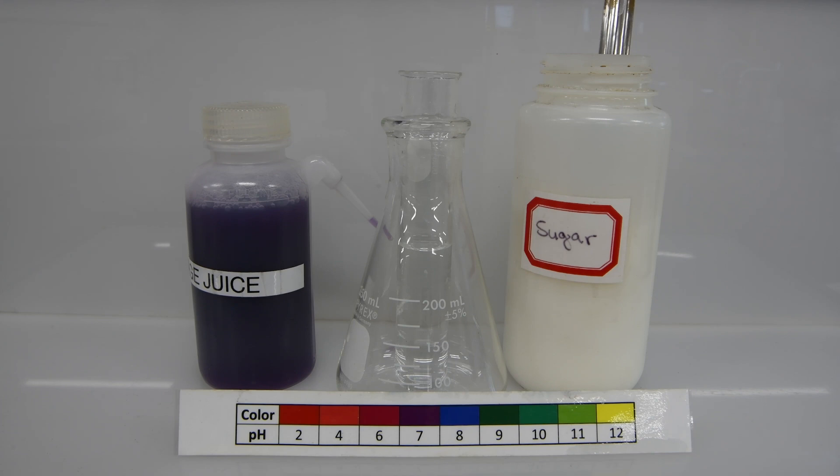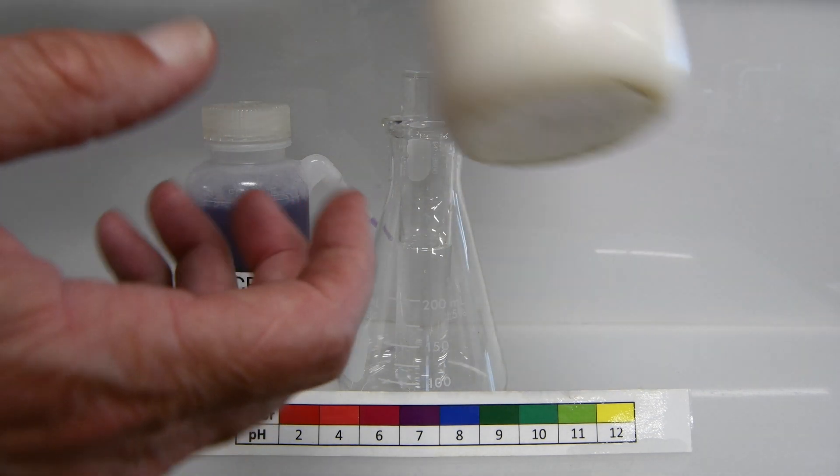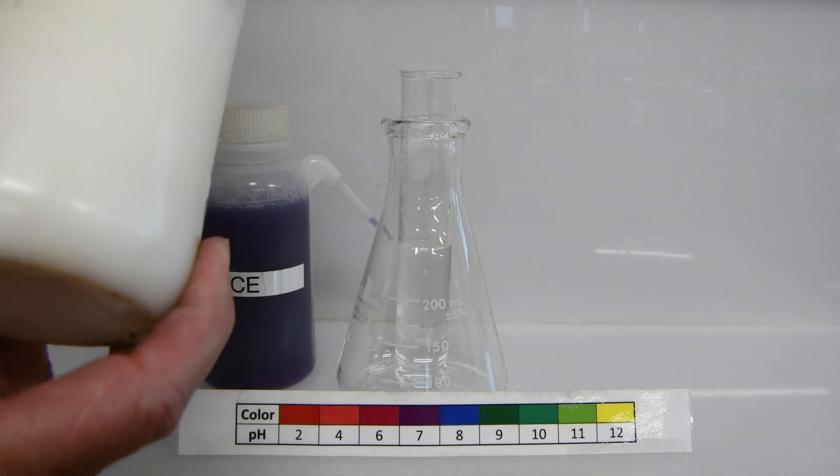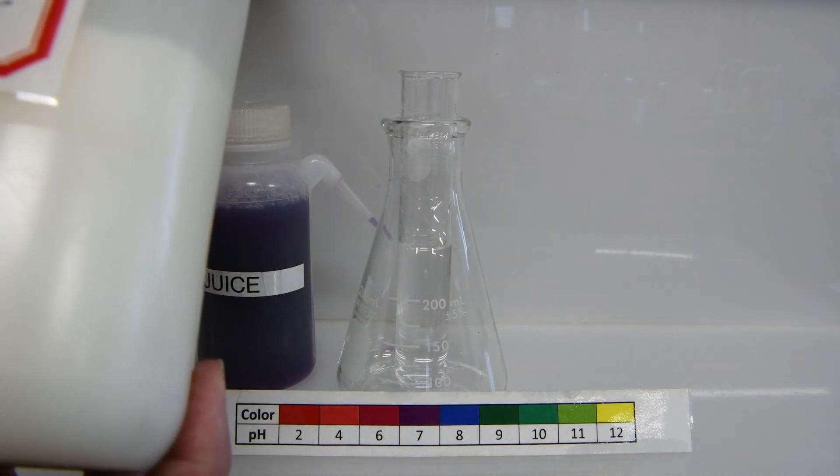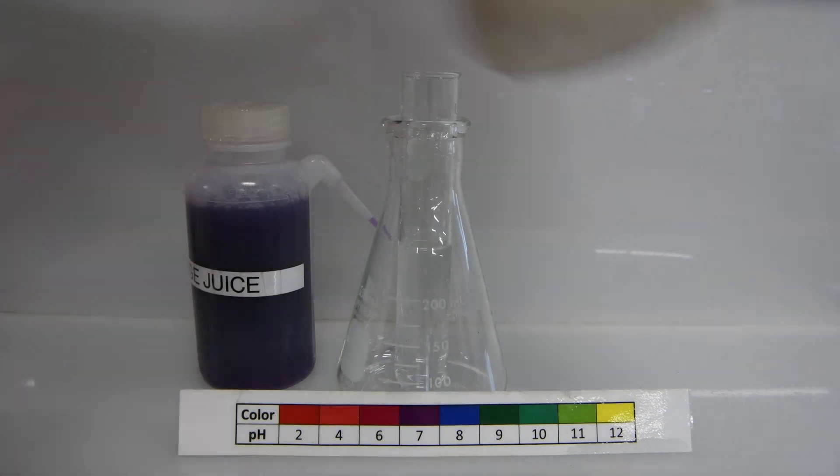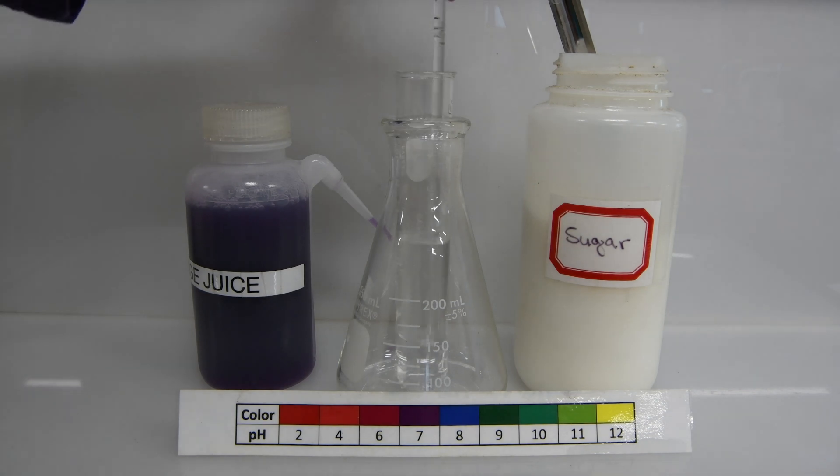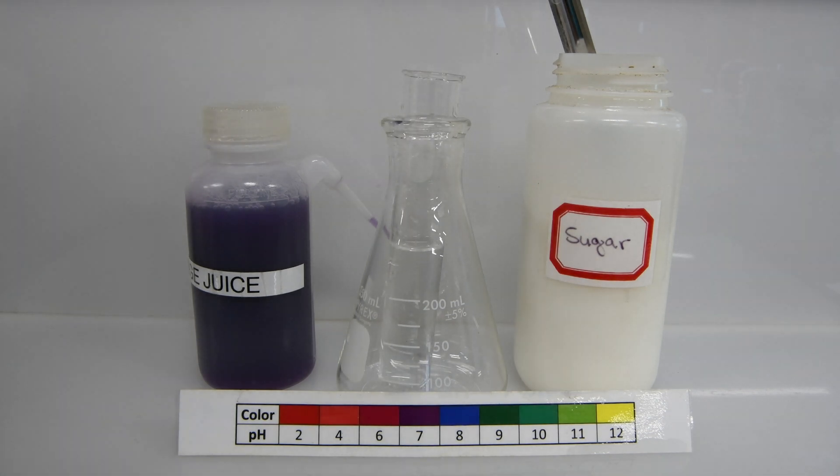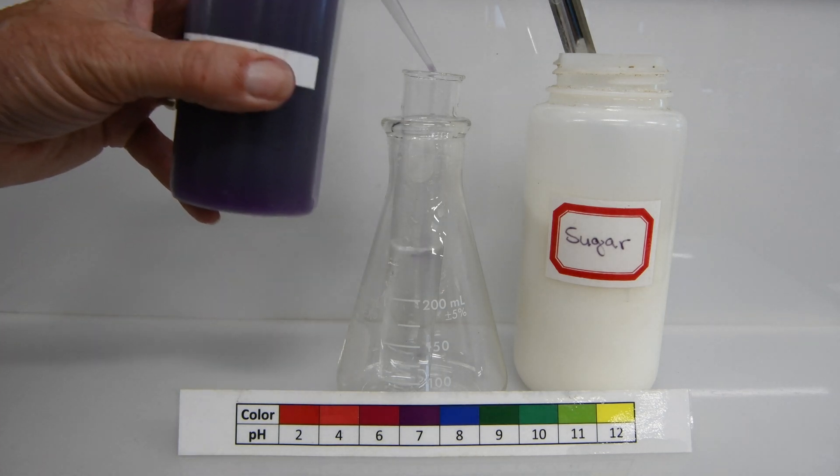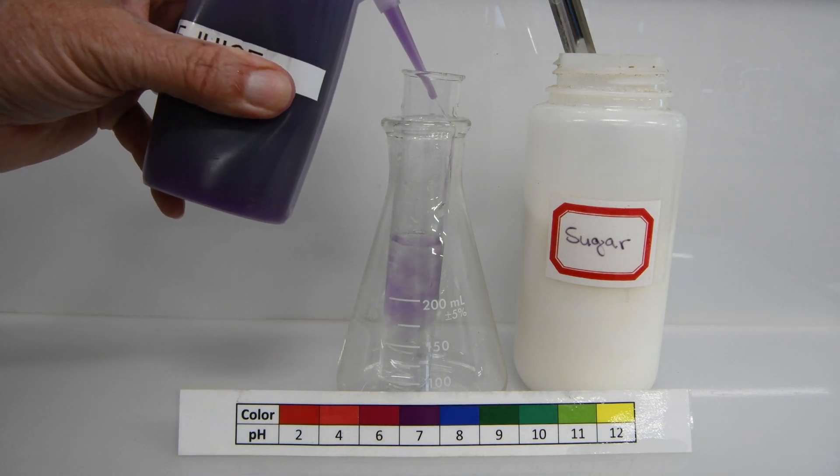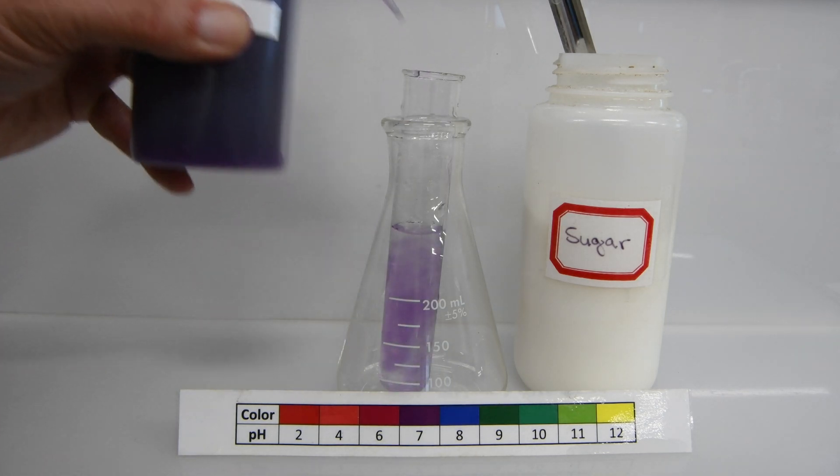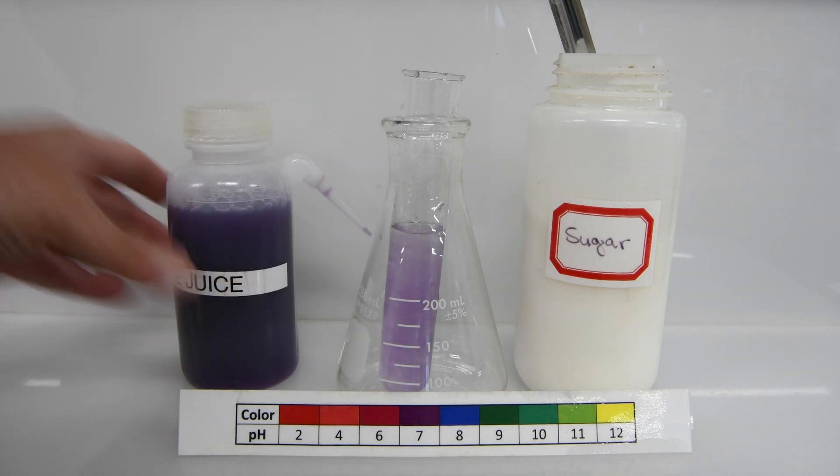Next, we'll be testing a sample of sugar. I've already added some deionized water to the test tube. So let's go ahead and add a small amount of sugar. We'll then need to stir it to make sure the sugar is dissolved in the water. And then we can go ahead and add our cabbage juice. And it appears that the color has stayed the same.